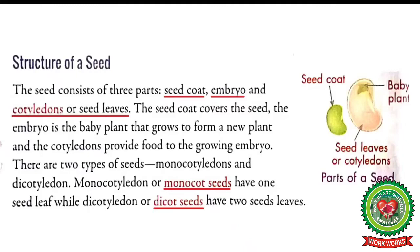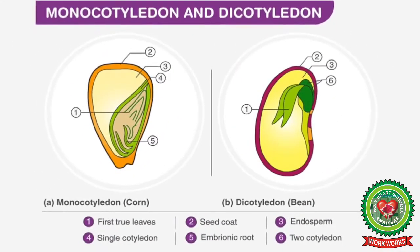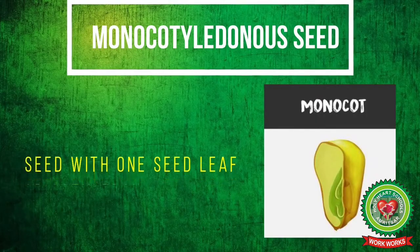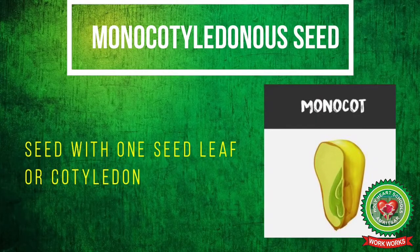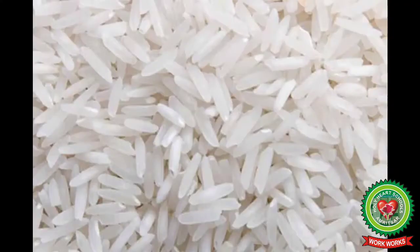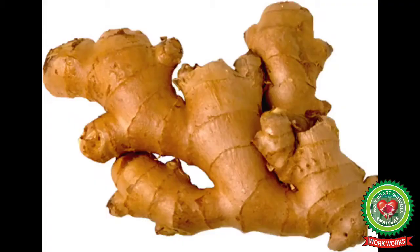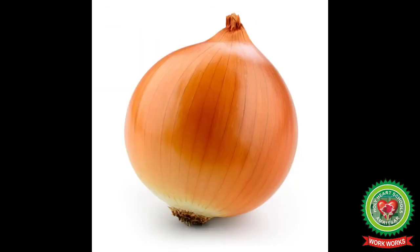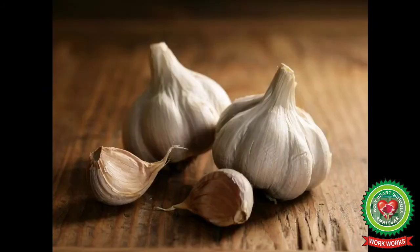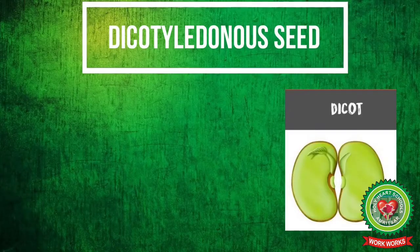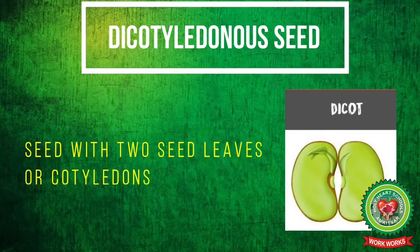There are two types of seeds: monocotyledon and dicotyledon. Monocotyledon or monocot seeds are seeds with one seed leaf or cotyledon. Examples of monocot seeds are rice, wheat, maize, ginger, onion, garlic, etc.